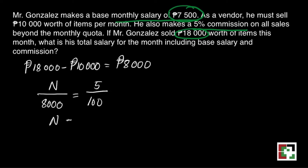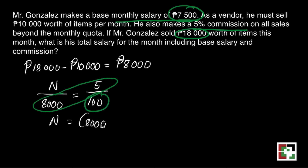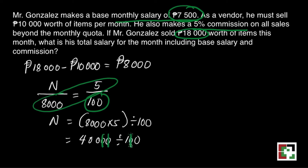How to get the value of N? We'll do cross multiplication. That's 8,000 times 5 divided by 100. We just cancel the zeros there and we get 400 pesos. This is his commission.